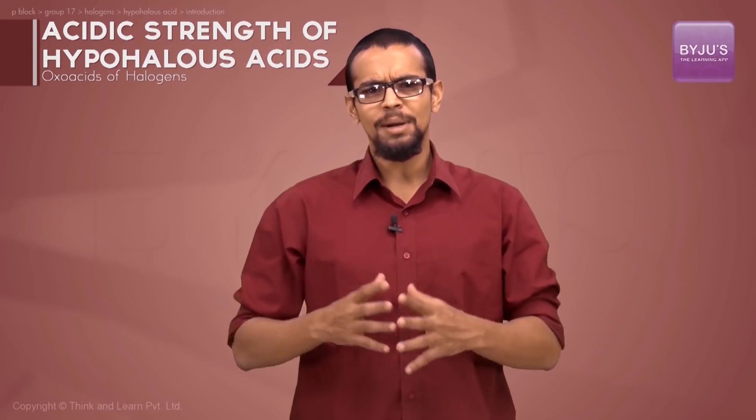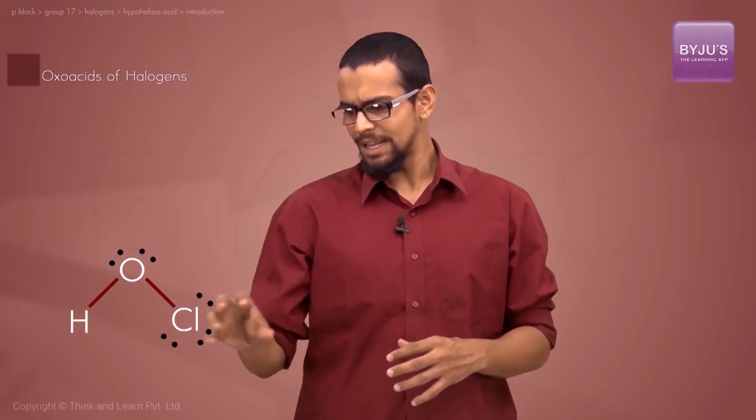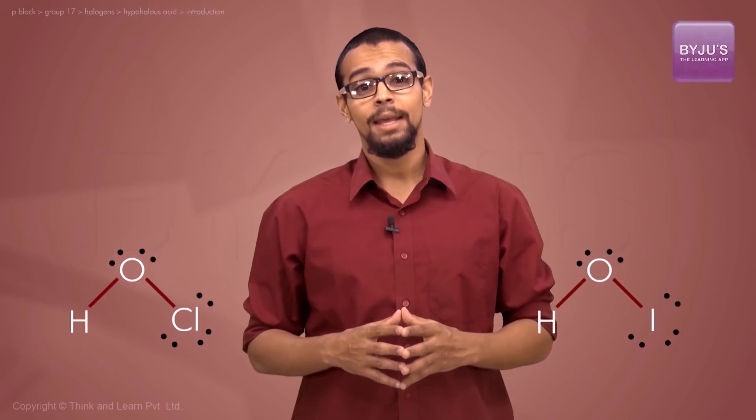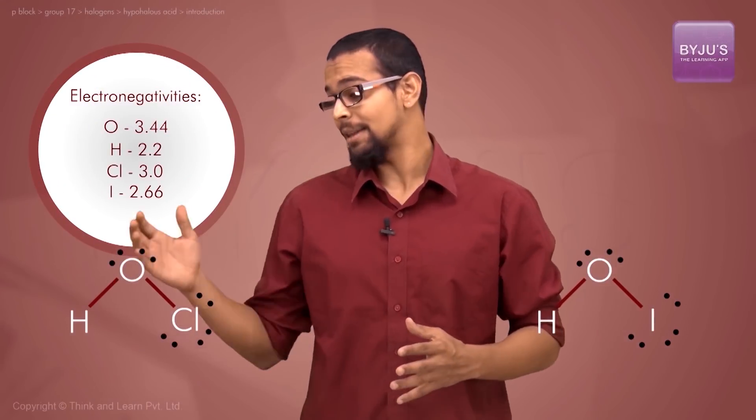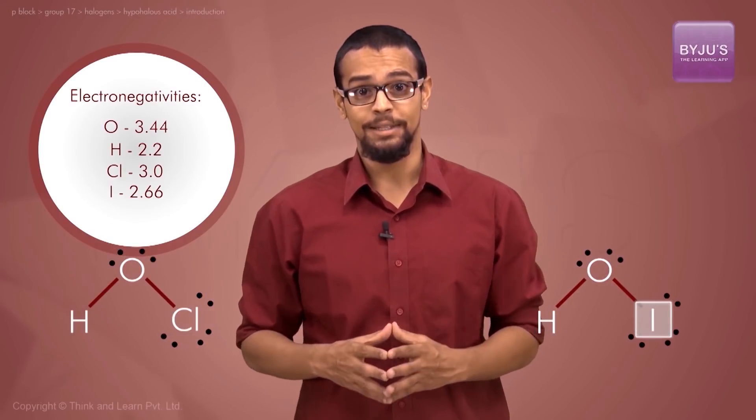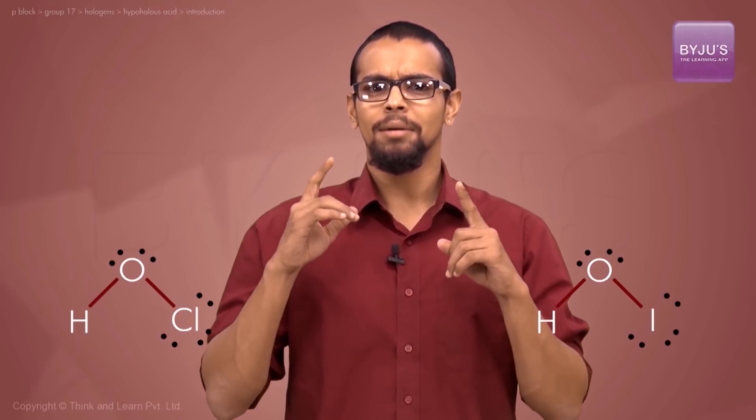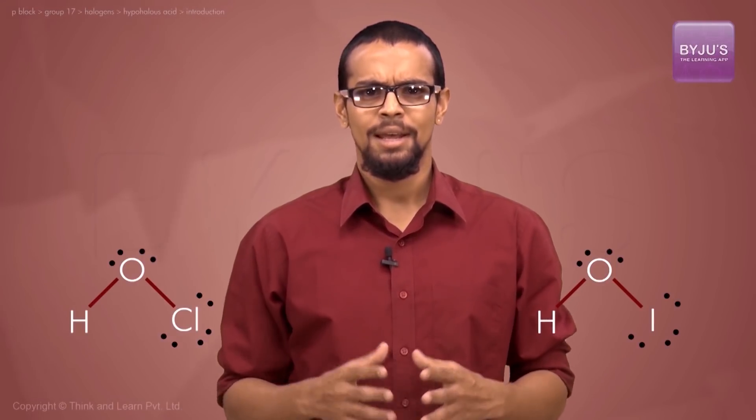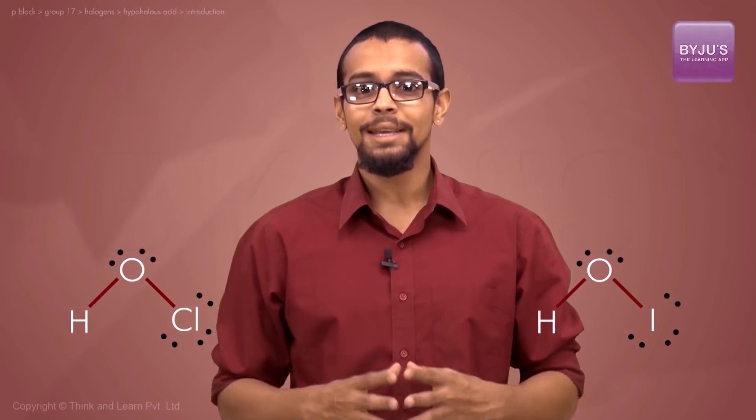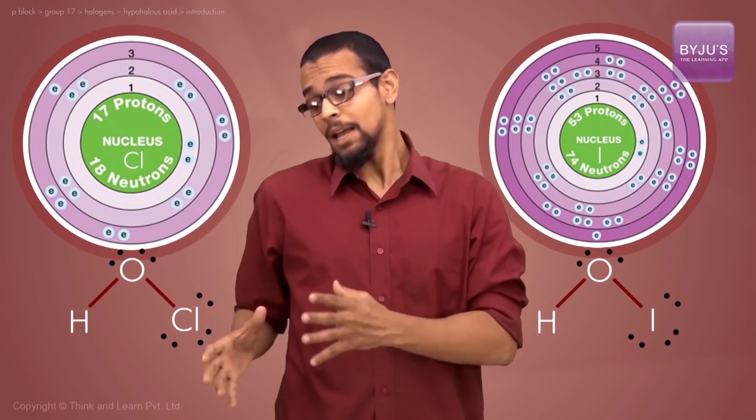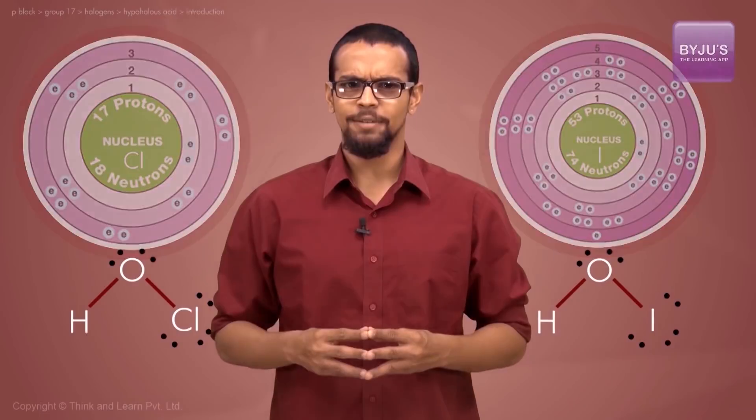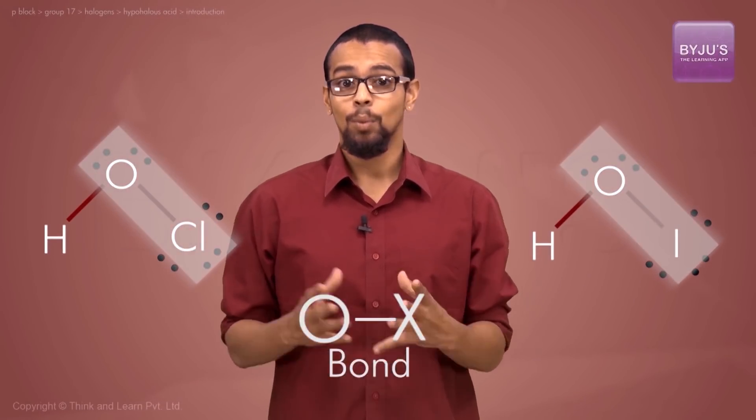Let's consider the acidic character of the hypohalous acids, the HOX acids. Comparing HOCl and HOI: oxygen has greater electronegativity than hydrogen, chlorine, or iodine. What influences bonding is the electronegativity of the halogens themselves. Chlorine has greater electronegativity than iodine. Where is the electronegativity difference greater - in the OCl bond or the OI bond?